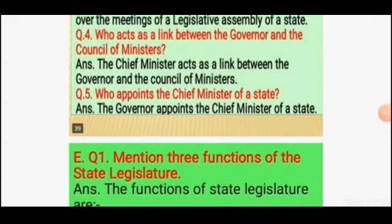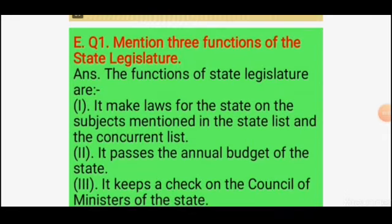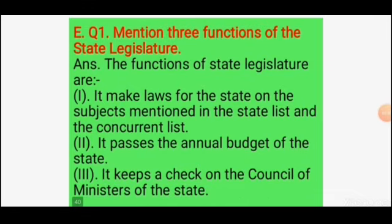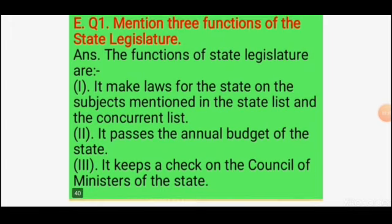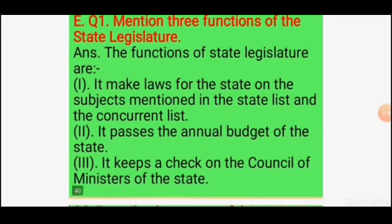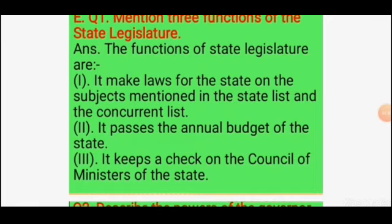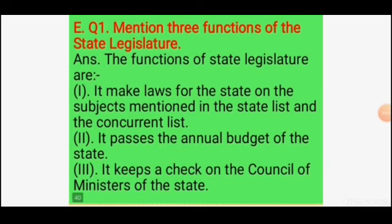Now Part D, question answers. First question: mention three functions of the state legislature. The answer is: first, it makes laws for the state on the subjects mentioned in the state list and the concurrent list. Second, it passes the annual budget of the state. Third, it keeps a check on the council of ministers of the state.